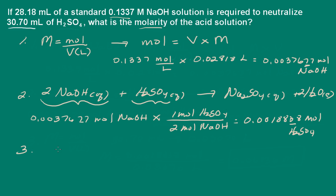Now we have the moles of sulfuric acid, and we also have the volume of sulfuric acid. They tell us 30.7 milliliters, which is the same as 0.0307 liters. So now to find the molarity,